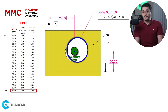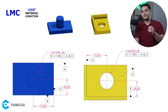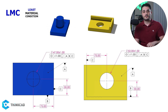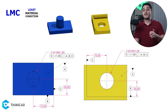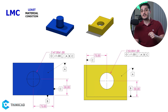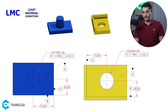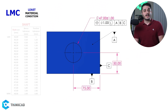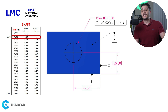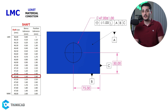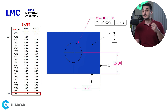Now let's go over the same two examples when we have LMC conditions specified in our GD&T callouts — this is exactly the opposite of what we had with MMC conditions. There is no bonus tolerance at LMC, and we gain bonus tolerance as we depart from LMC and move towards MMC, the exact amount of departure. For our boss feature, we have no bonus tolerance at LMC of 46 mm and we gain bonus tolerance as we move towards MMC of 48 mm. At MMC, we have a bonus tolerance of 2 mm, making our total position tolerance 3 mm.